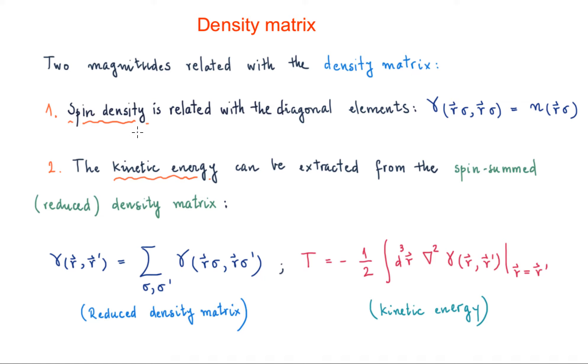One is the spin density. The spin density is related with the diagonal elements of this density matrix. Diagonal elements are those where r prime and sigma prime are r and sigma. So these diagonal elements of the density matrix give the spin density, the density of electrons with spin state sigma.